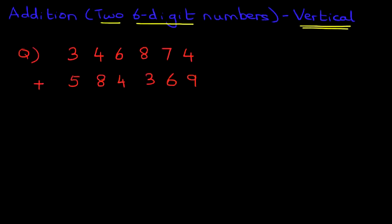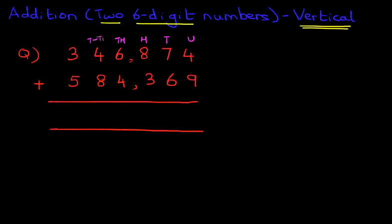Now we can actually put commas between the thousands and the hundreds. Let's put a nice big equal sign over here. And we don't have to, but let's label the columns as well. We've got units, tens, hundreds, thousands, ten thousands, and hundred thousands.